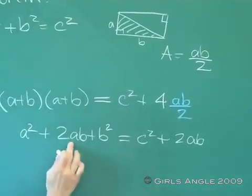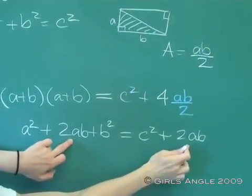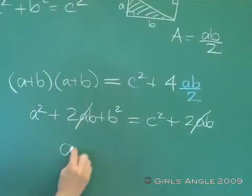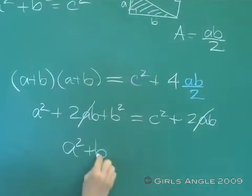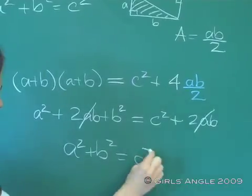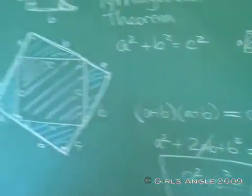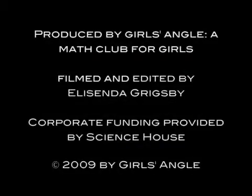Now we have 2ab on the one side and we have 2ab on the other side, so we can cancel them. And what we're left with is that a squared plus b squared equals c squared. That's the Pythagorean theorem. Thank you.